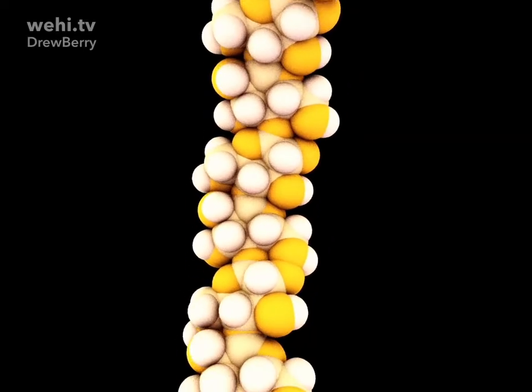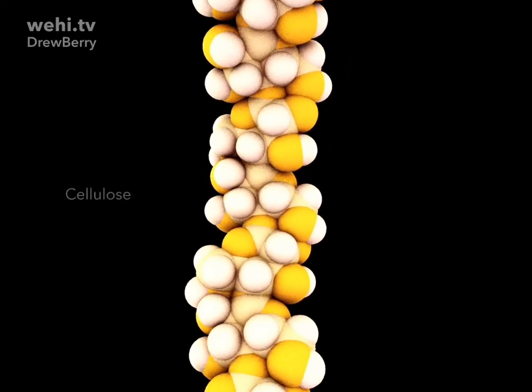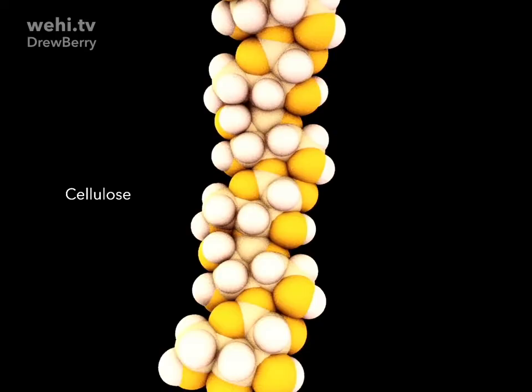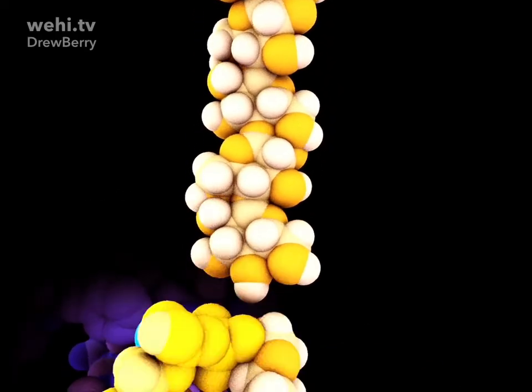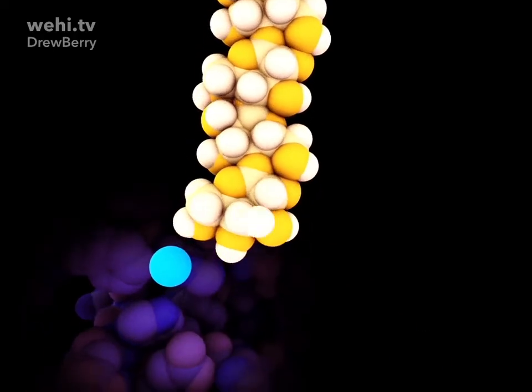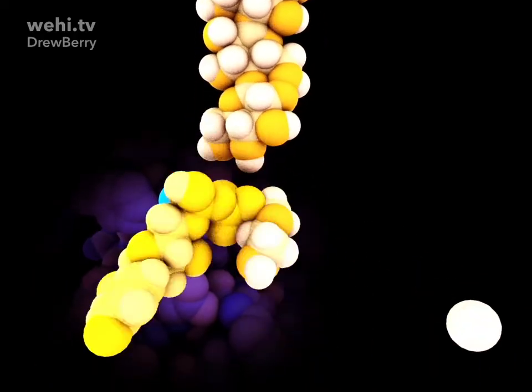The most abundant polymer on Earth made by living things is cellulose. The cellulose molecule is a long flat ribbon made of thousands of glucose subunits linked together into chains.